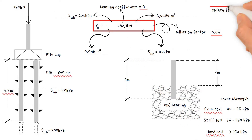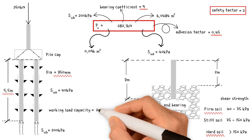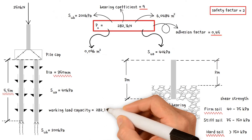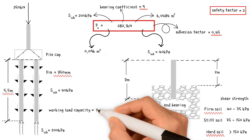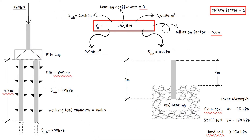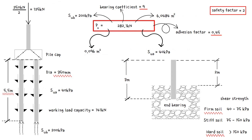We will use a safety factor of 2 to calculate working load capacity. Hence, working load capacity equals ultimate pile capacity 282.1 kN divided by 2, resulting in a value of 141.1 kN. Because there are two piles supporting the column, the load is 125 kN per pile, which is less than the working load capacity of 141 kN. Consequently, the piles are sufficient to carry the load.